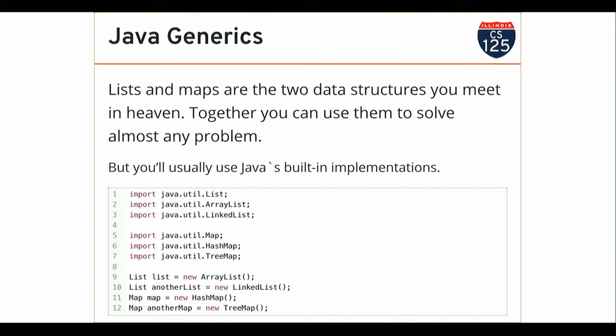I refer to lists and maps as the two data structures we meet in heaven — they're incredibly useful. As you go forward in your career in software development, you can do a lot with just these two data structures. There are times when you need a fancier data structure, particularly when you go on to take 225. But a lot of times when you're writing high-level code or applications, lists and maps are enough to get the work done — they're what I use in 98-99% of the programming I do.